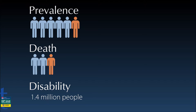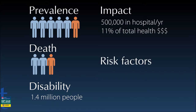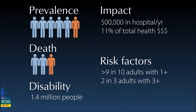As expected, this leads to some major impacts on the health system — somewhere in the order of half a million hospital admissions per year, and 11% of all health expenditure goes to cardiovascular disease. Importantly, we may be able to do something about it: over 90% of adults have one or more risk factors for cardiovascular disease, and two-thirds have three or more.